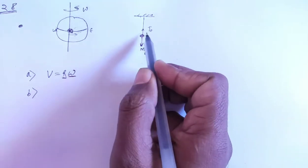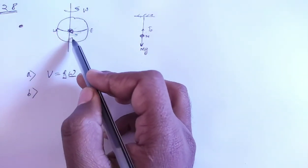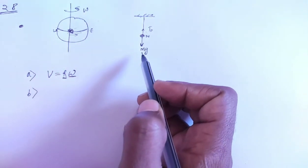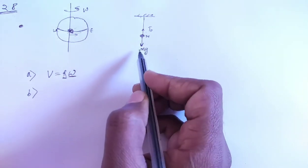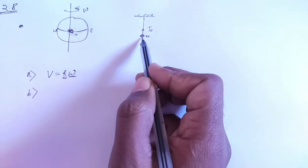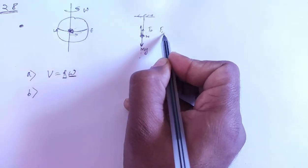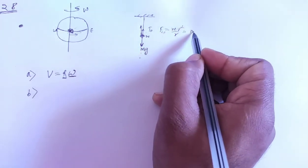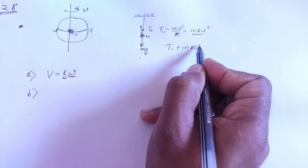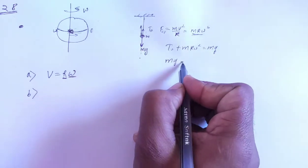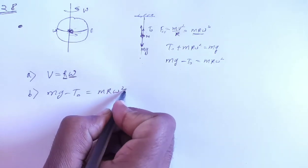The simple equation is T0 equals mg, but in this case the pendulum is in the ship and Earth is rotating, so centrifugal force will act. Centrifugal force acts outward, so upward. Centrifugal force is m v² / r or m R omega². The equation is T0 plus centrifugal force equals mg. Therefore mg minus T0 equals m R omega². This is your second answer.